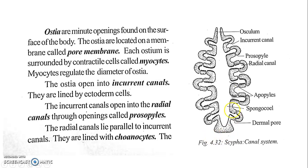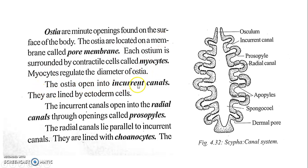If you cut this organism, you will get this type of structure. This opening is called the Ostea. These Ostea are controlled by the myocytes — they regulate the opening and closing, or the diameter of the Ostea. Then, the Ostea opens into the incurrent canals.